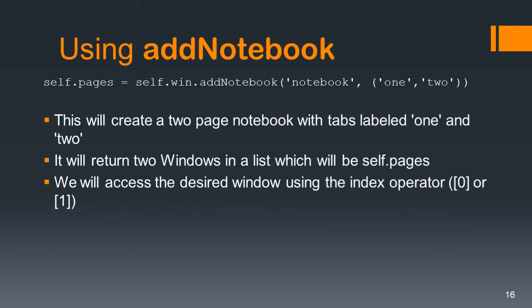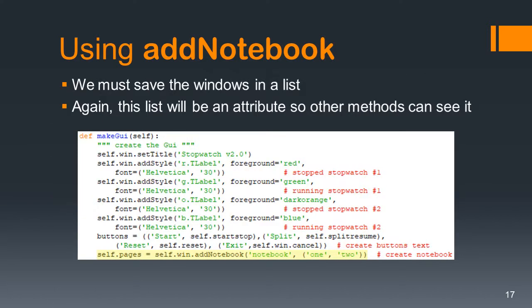It's actually quite simple. You say self.pages — that's our attribute — equals self.win.add_notebook, with the tag 'notebook' and pages 'one' and 'two'. This creates a two-page notebook with tabs labeled one and two, and returns two TK Entertoy windows into a list called self.pages. To access the first window, use index zero; the second window uses index one. Here's the actual code: self.pages equals self.win add_notebook, notebook, one, two.